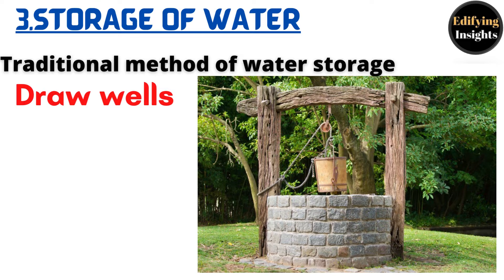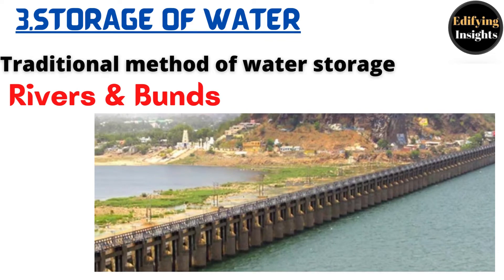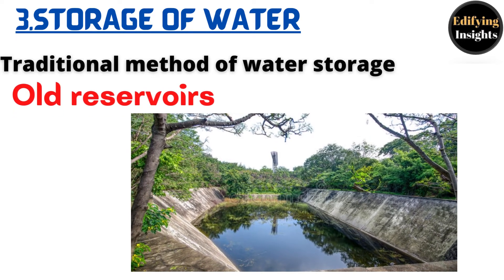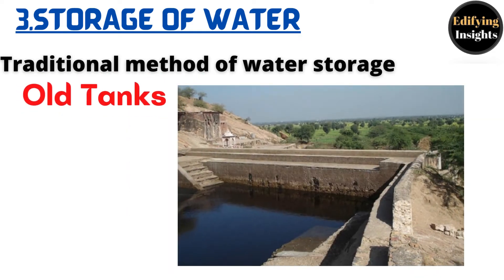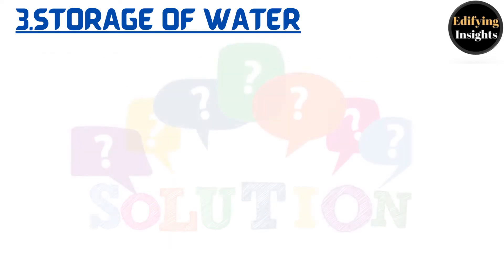Fourth, rivers and bunds — earthen or masonry bunds were built across rivers to store their water. Fifth, old reservoirs — reservoirs were built in areas of low rainfall or without a major river, and most were built using stone or mortar. Sixth, old tanks — earlier, tanks were used to store water, and some large cities still have these old tanks, some of which are still in use. These were the six traditional methods of storing water.